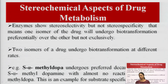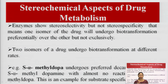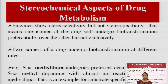Stereochemical aspects also affect drug metabolism. The spatial arrangement of a drug matters — one isomer may undergo a higher rate of metabolism while the other does not. For example, S-alpha-methyl dopa undergoes preferred decarboxylation, while the R-alpha-methyl dopa form does not undergo this reaction. If given as a racemic mixture, the R form will not get metabolized and may cause toxicity in the patient.